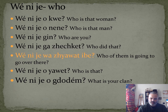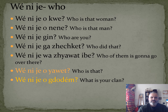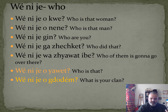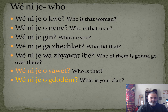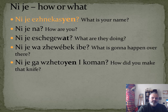Wen isha was yeah I what eba means 'who of them is going to go over there?' Wen isha oh yeah wat means 'who is that?' Wen isha o gedodem means 'what is your clan?' — clan is animate, so instead of wek nije we use wen isha, literally 'who is it that is your clan,' but in English we translate it as 'what is your clan?' Ninja eshnikazian means 'what is your name' or 'how are you called?'